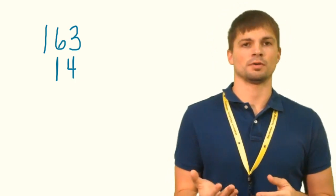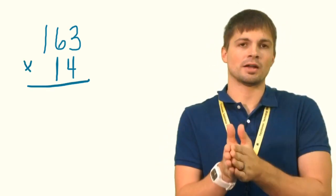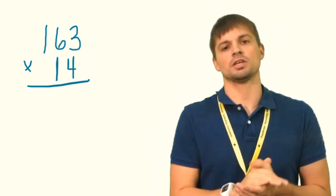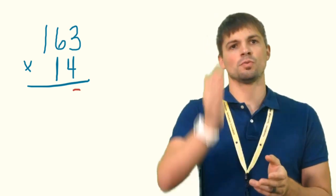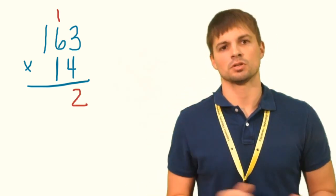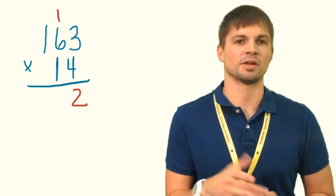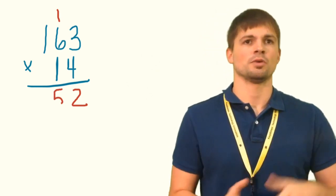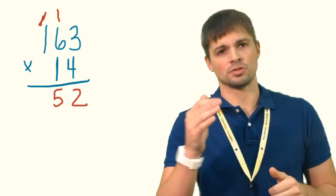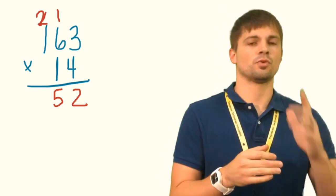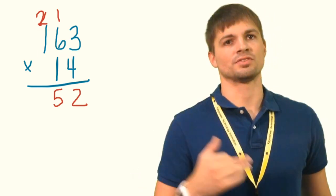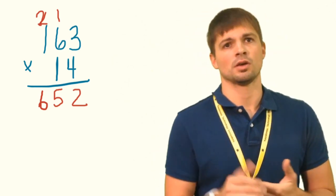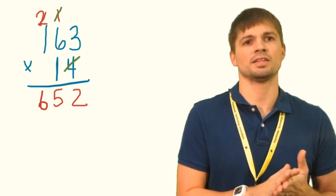We start with the 4 on the bottom and multiply it by each digit on top. Four times 3 is 12 — put down the 2 and carry the 1. Then 6 times 4 is 24, plus the carried 1 gives us 25 — put down the 5 and carry the 2. Then 1 times 4 is 4, plus the carried 2 gives us 6. Our first partial product is 652.